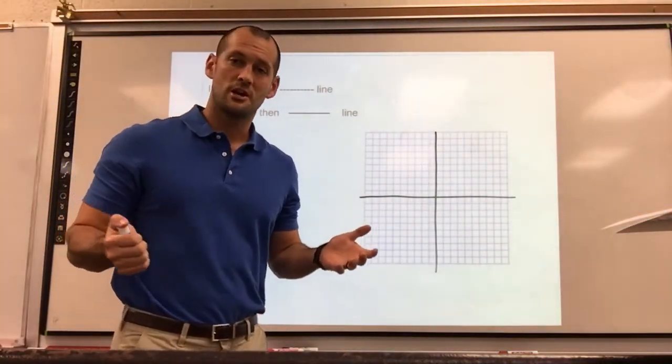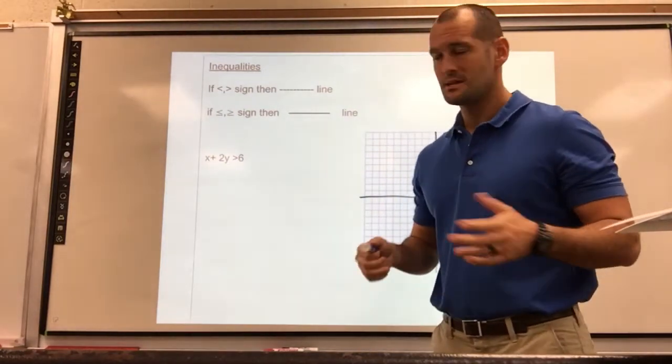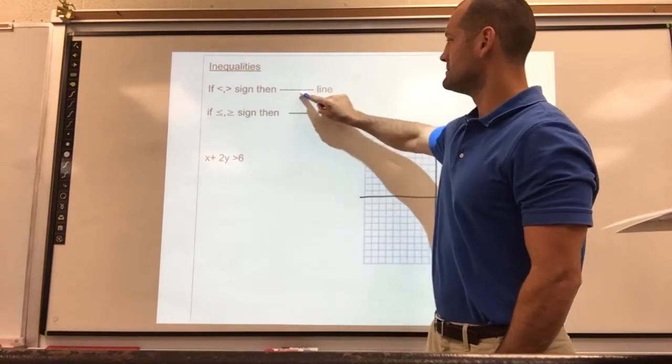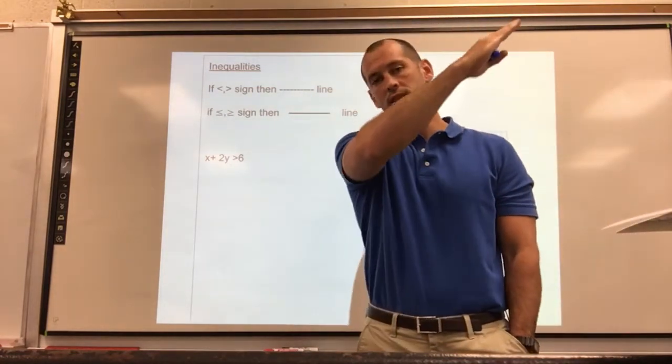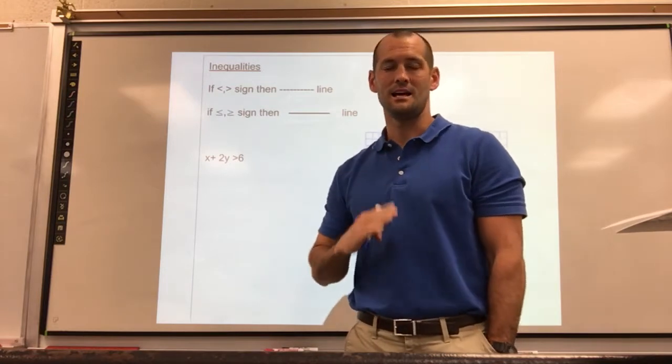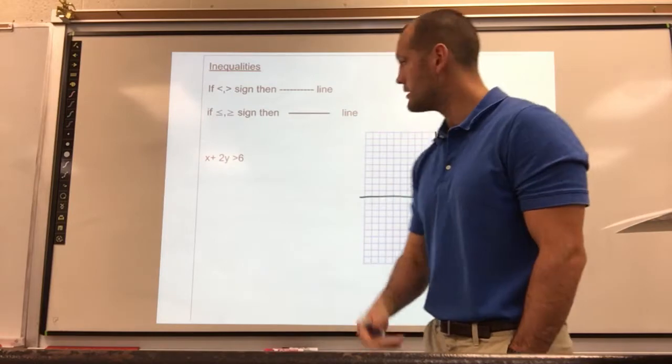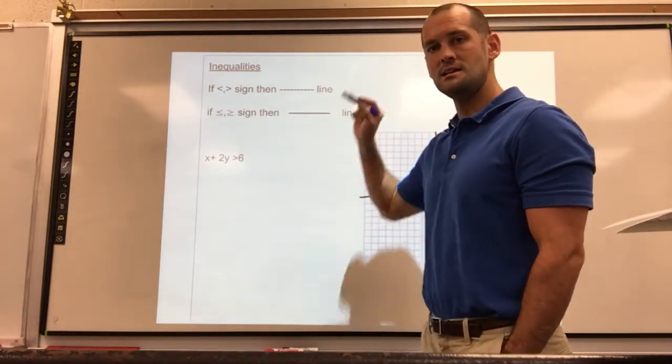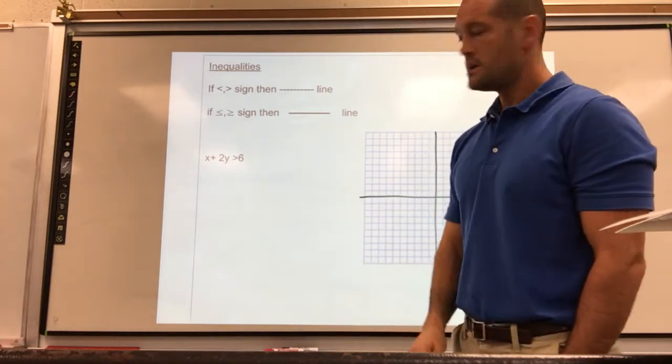All right, quick easy one today. We're going to be talking about graphing linear inequalities. Just a couple reminders: if we are not equal to, it is a dotted line, meaning it is not including the points on that line. Those points are not a solution, but everything either greater or less than are. If it is equal to, solid line. Everything on that line is actually going to be a solution for your inequality.